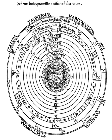The celestial spheres, or celestial orbs, were the fundamental entities of the cosmological models developed by Plato, Eudoxus, Aristotle, Ptolemy, Copernicus, and others. In these celestial models, the apparent motions of the fixed stars and planets are accounted for by treating them as embedded in rotating spheres made of an ethereal, transparent fifth element.